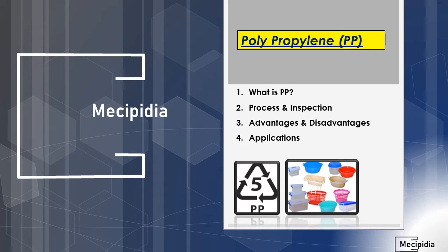Hello friends, welcome to Mikipedia. This channel majorly covers different topics of mechanical engineering, and our aim is to learn and motivate others to learn. Today's topic will be polypropylene, also called PP. The chapters under this topic are: what is PP, the processes and inspections involved, advantages and disadvantages of PP, and applications of polypropylene.